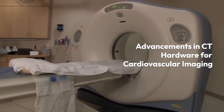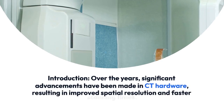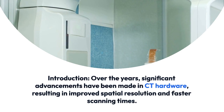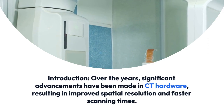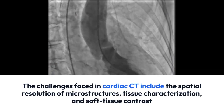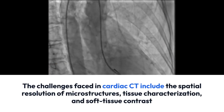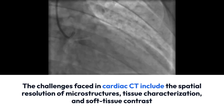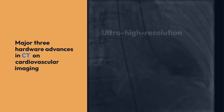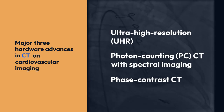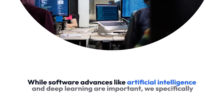Advancements in CT Hardware for Cardiovascular Imaging. Over the years, significant advancements have been made in CT hardware, resulting in improved spatial resolution and faster scanning times. The challenges faced in cardiac CT include the spatial resolution of microstructures, tissue characterization, and soft tissue contrast. Three major hardware advances in CT for cardiovascular imaging are: Ultra High Resolution, Photon Counting with Spectral Imaging, and Phase Contrast CT.